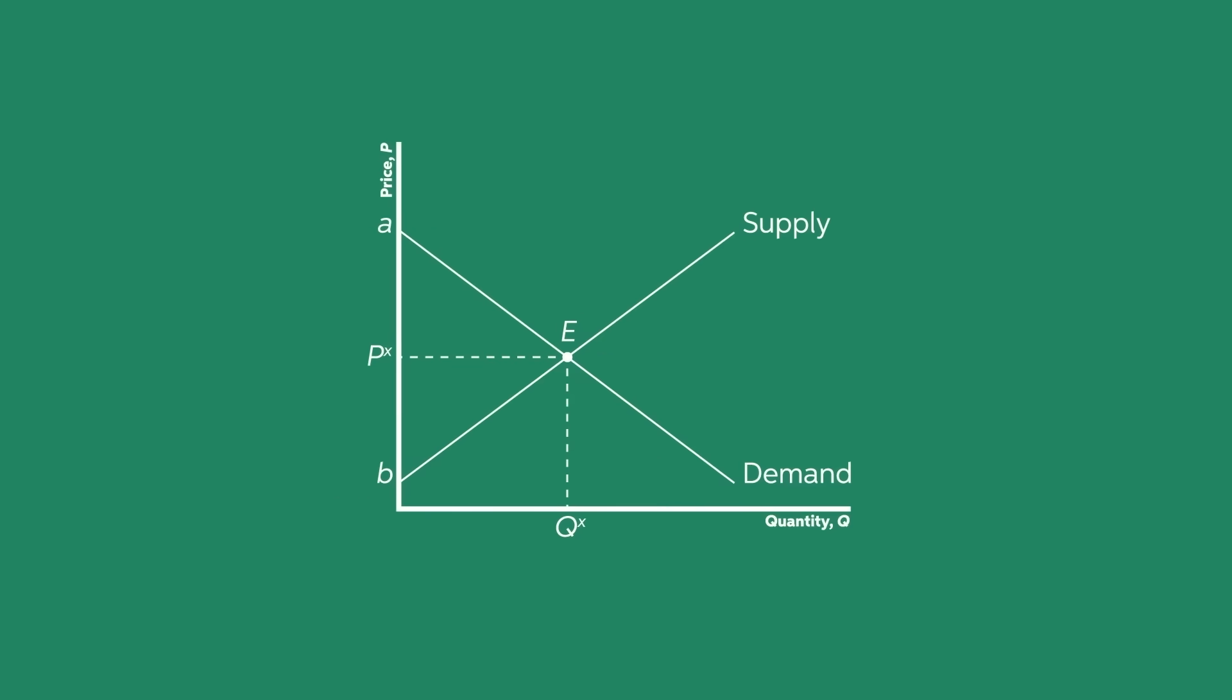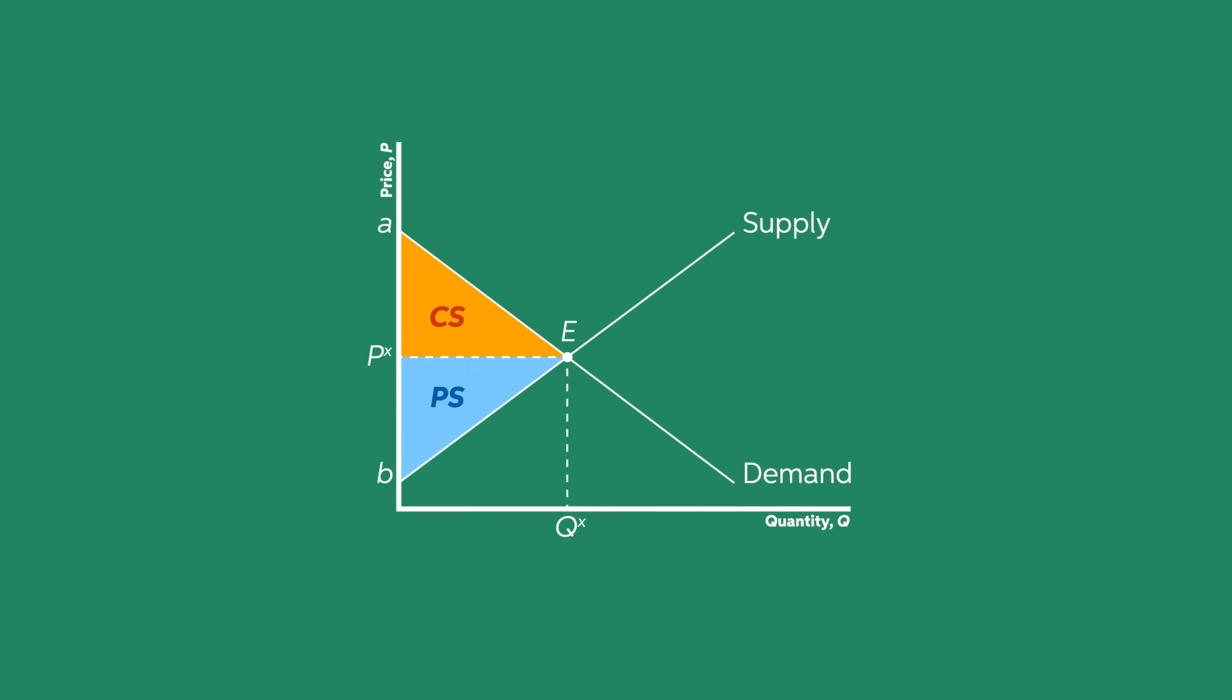Once we have computed our consumer and producer surplus, we can see that there is something pretty special about this equilibrium point. It is the point at which the social surplus is as big as it can possibly get, given the supply and demand function. This is why perfectly competitive markets are seen as efficient. They maximize social welfare. We can easily see this in the graph.